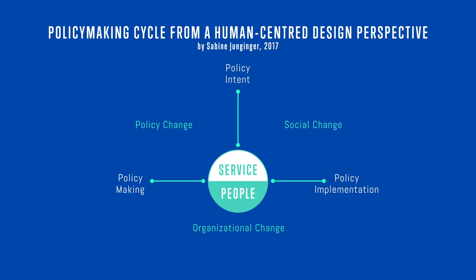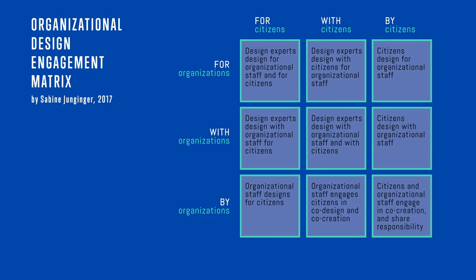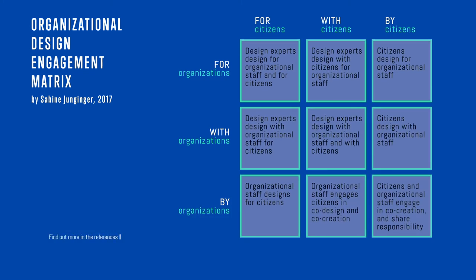Consequently, there is then a third focus on the actual development of these particular products and services. This integrated policy design cycle demands different skills and capabilities from those involved in the design process. I will provide you with one more tool to start your own reflection on how you may go about designing, which I have loosely called the Organizational Design Engagement Matrix. The Matrix proposes that public organizations have basically three options to engage with design challenges. They can either design for citizens, with citizens, or they can give the design lead to the citizens themselves.